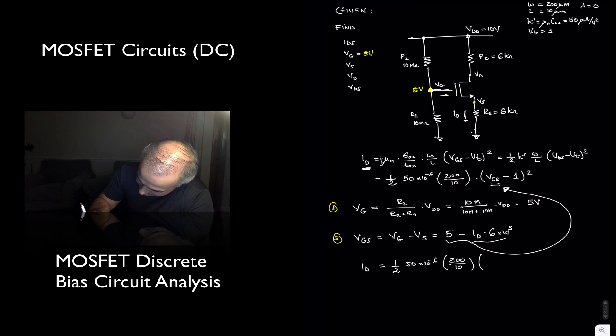Vgs, we plug in 5 minus Id, 6 times 10 to the 3, minus 1, squared, and solve for Id.